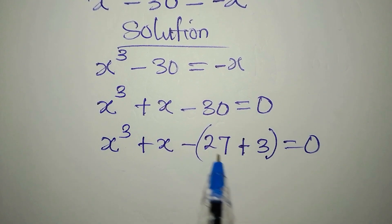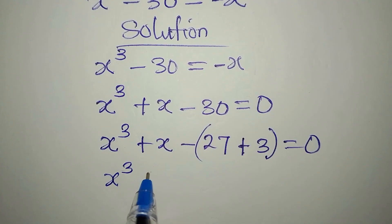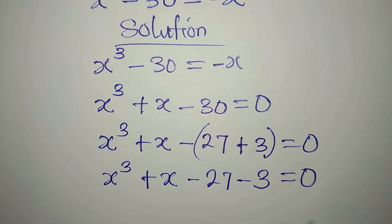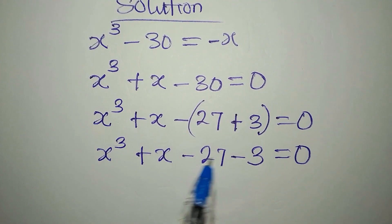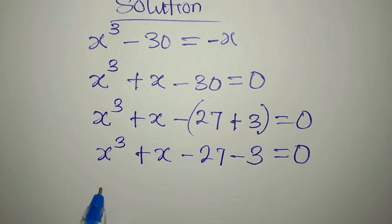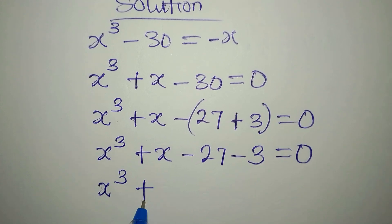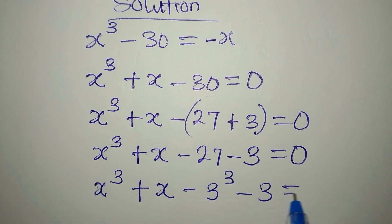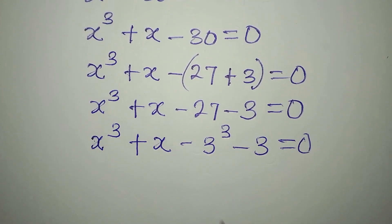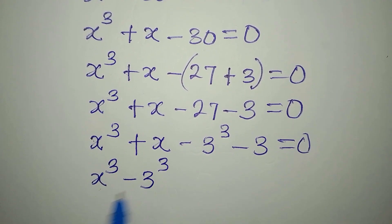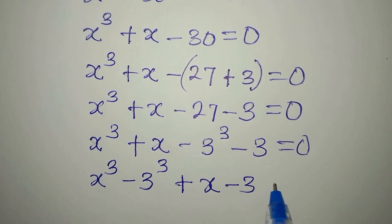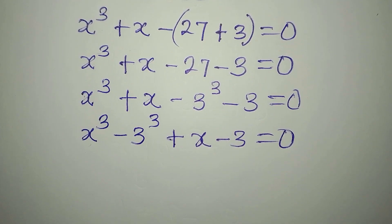Everything is still equal to zero. If you open the brackets, you have x to the power of 3 plus x minus 27 minus 3 equals 0. We can now express this in a useful form: x³ minus 3³, and then the remaining terms x minus 3, which we bring together, all equal to zero.